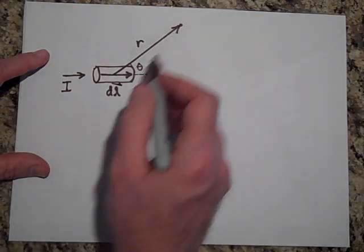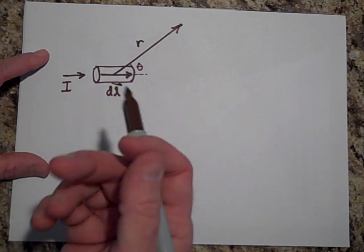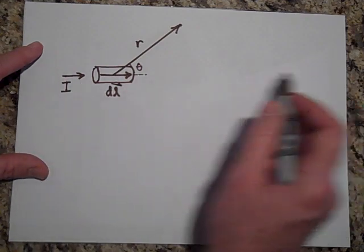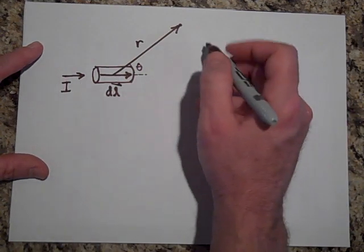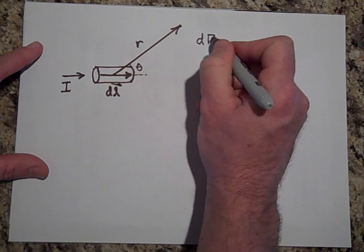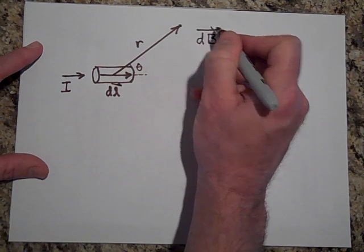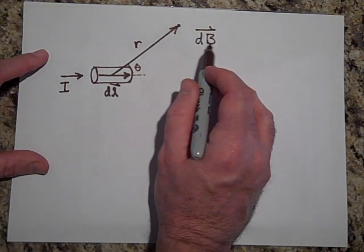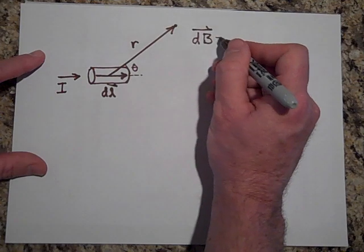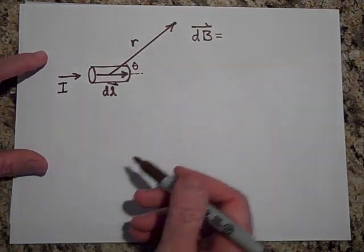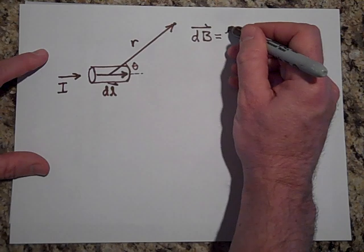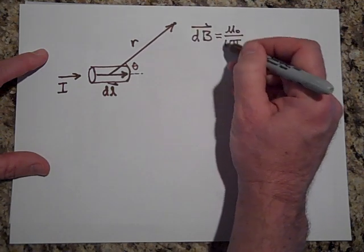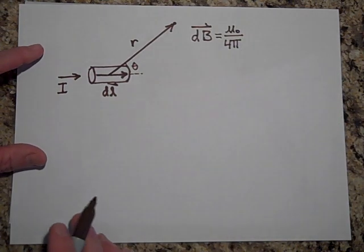Now to get the field, the field just due to this little DL is really tiny, and so to remind ourselves that this is a field not for the whole wire, but just for DL, I'm going to put the field there, it's not a big field, it's a little field, it's DB field. So the DB, the little field, the very tiny field due to this little DL is going to equal, it's going to look very similar to the equation from the last video, it's going to be mu naught over four pi. Remember this whole thing equals 1 times 10 to the negative 7th,